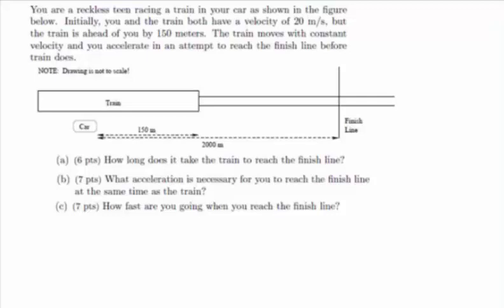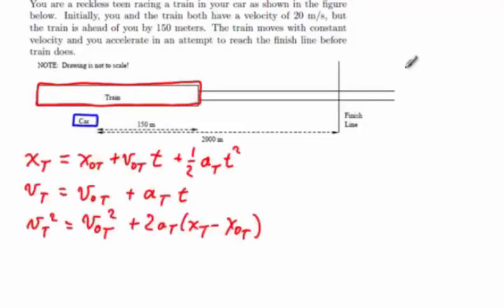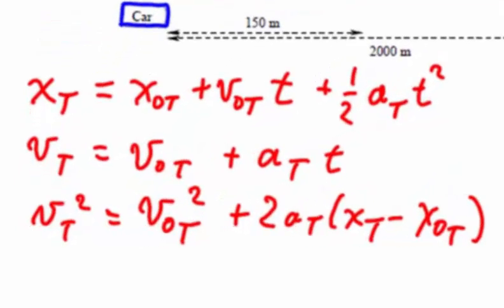Therefore we can make a list of equations, those that apply to the train and those that apply to the car. We'll draw the equations for the train in red and the equations for the car in blue. For the train we have this set of equations where each position, velocity, and acceleration has been labeled with a subscript T. However, the time which is common to both the train and the car carries no subscript.